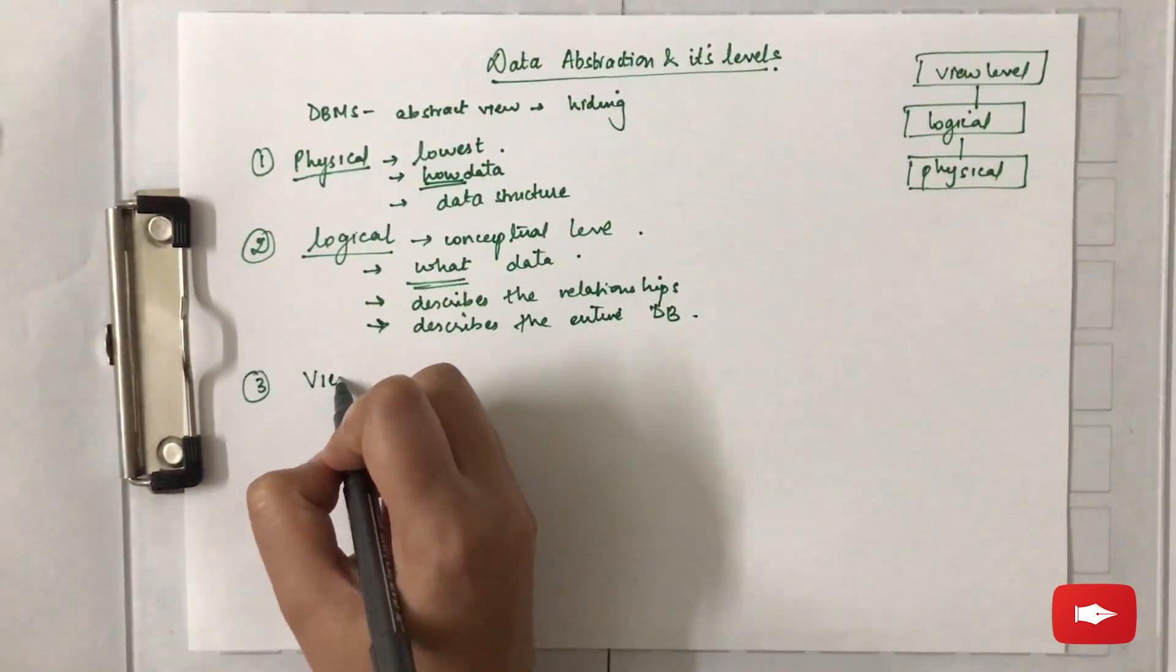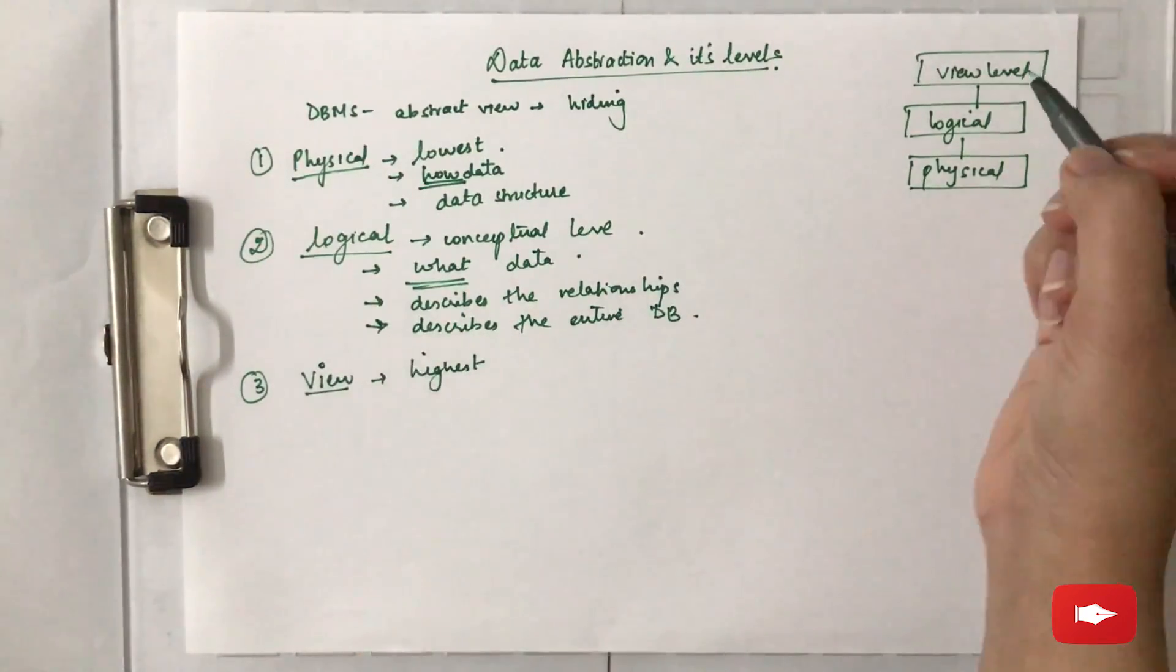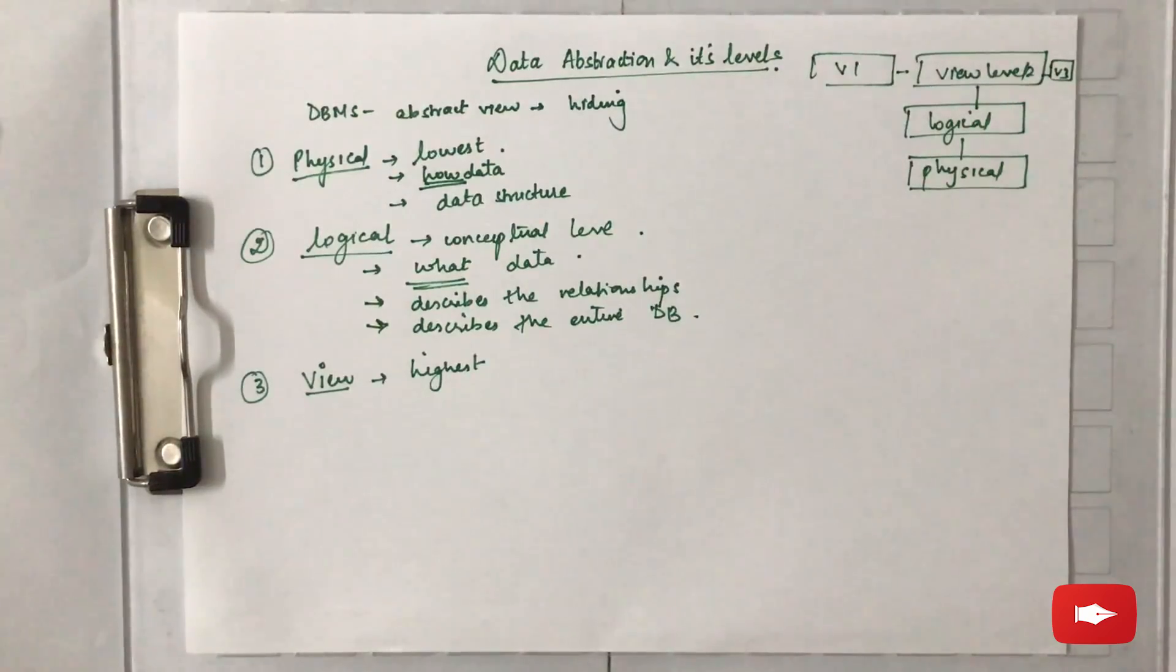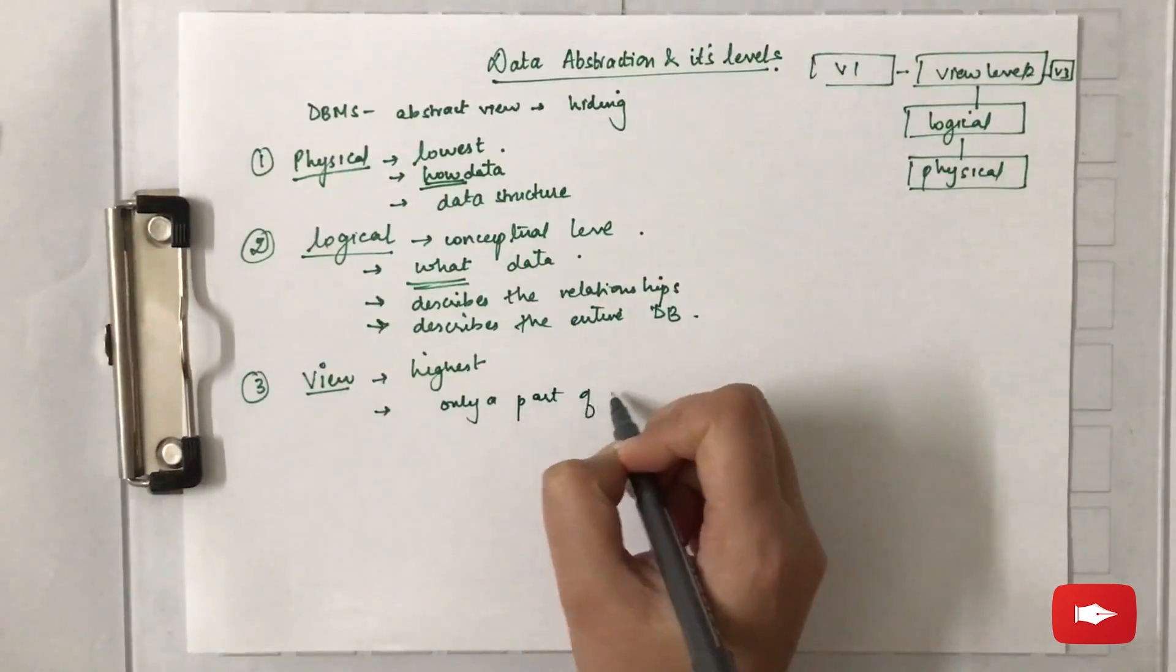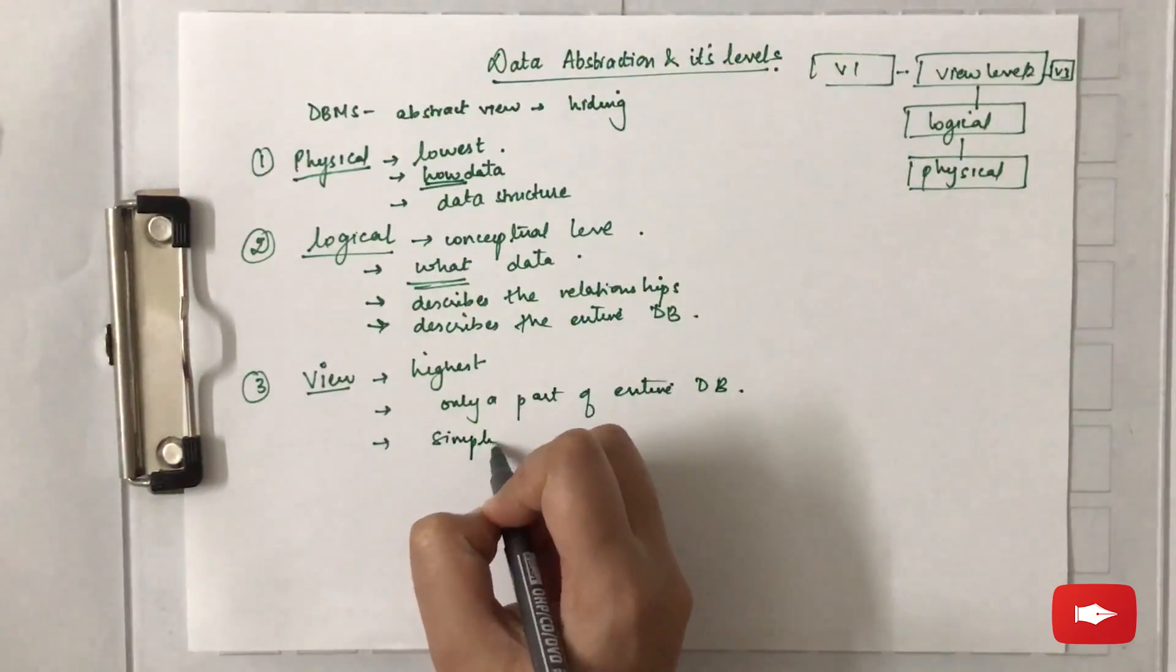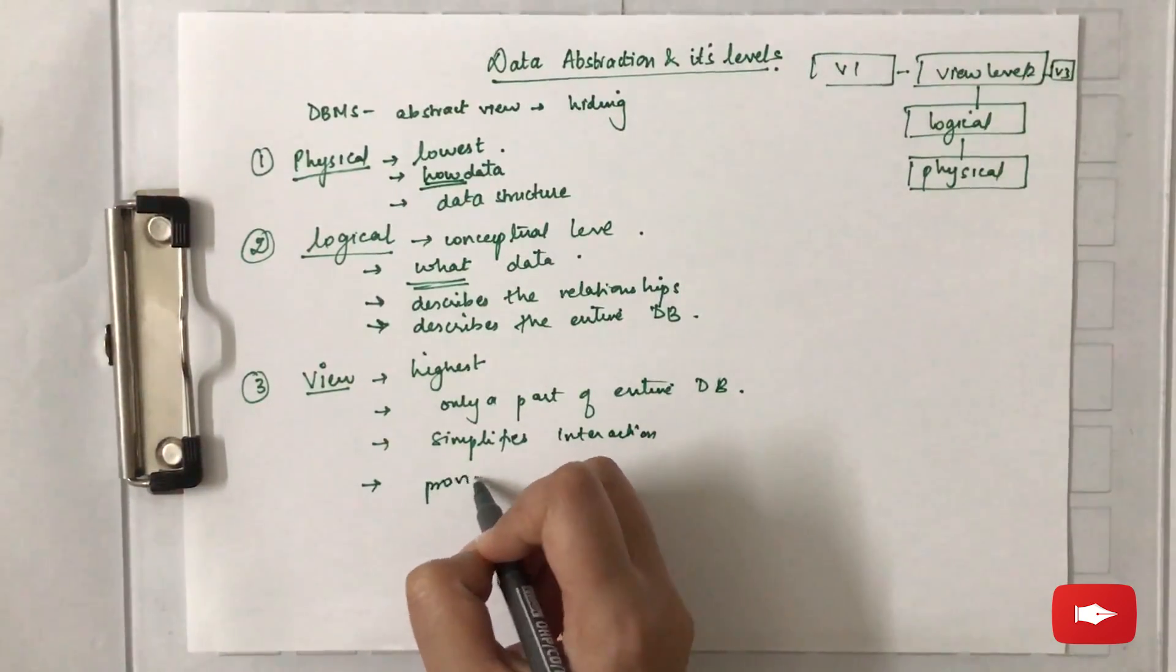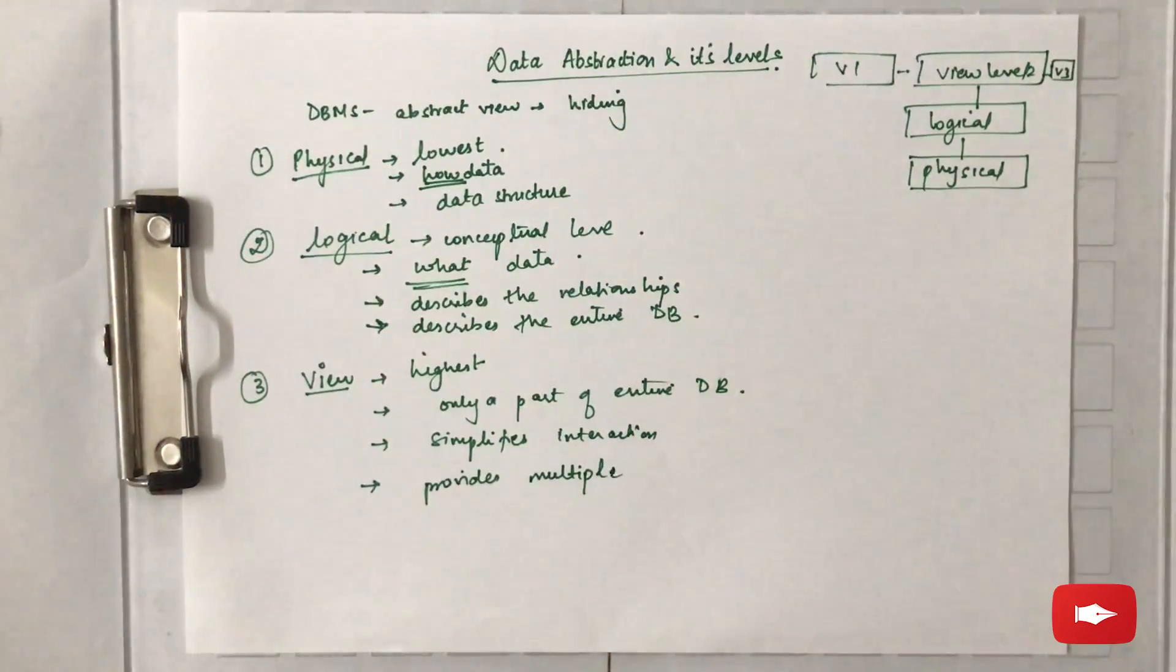Coming to the third level, that is the view level, and also the highest level. There are different views - view 1, view 2, view 3, and so on. Each view describes the entire database. It simplifies the interaction with the user and provides multiple views for the same database.